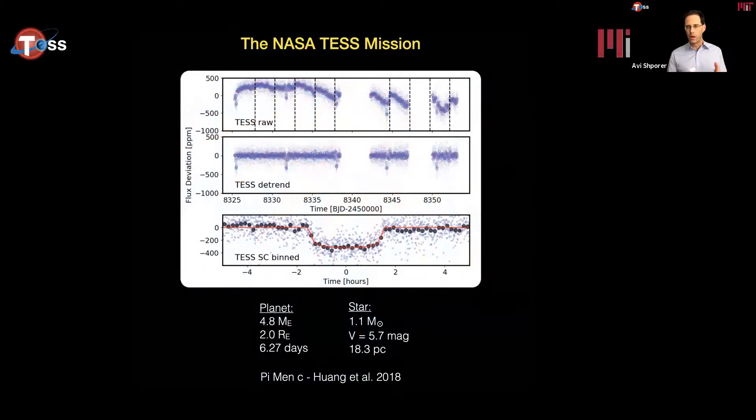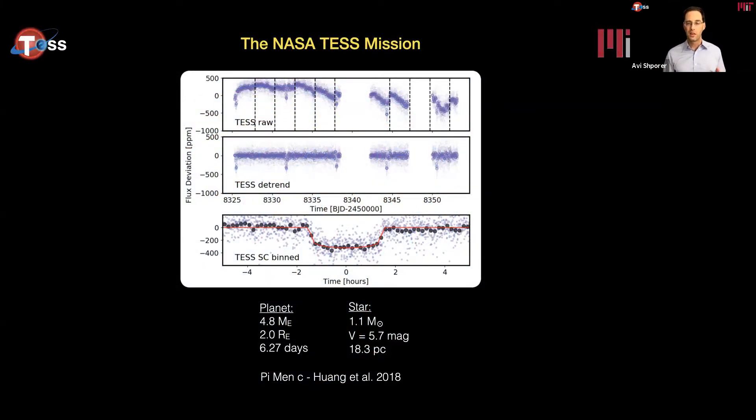Now I'll show some fun examples of detections of transiting planets. Here is the very first planet we have detected. You can see how the raw light curve is a bit messy, and we need to clean it or what we call detrend the light curve. And you can see in the mid panel, it is very flat or flattened. And you can clearly see these very, very shallow, but very clear and periodic drops in flux or stellar brightness. Notice that these drops are only very few hundred parts per million, which mean very few parts in 10,000. And the bottom plot shows the phase-folded transit light curve. This planet is small, only twice the radius of the Earth, and almost five times its mass.